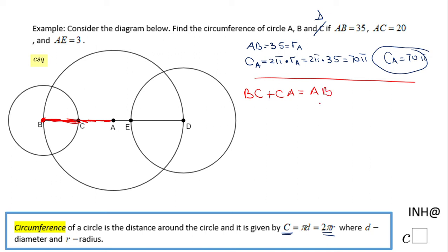AB is given to us as 35, CA is the same as AC which is 20, and we can find BC by just subtracting.